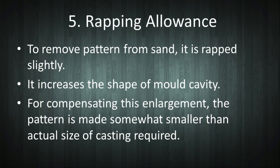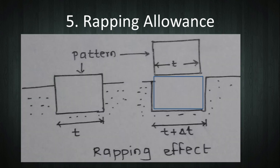The next allowance is wrapping allowance. To remove the pattern from sand easily, it is rapped slightly, which causes an increase in the size of the mold cavity. To compensate for this, the pattern is made somewhat smaller than the actual size required. As seen in the figure, when the pattern is removed it is rapped, and hence the cavity gets enlarged. Therefore, wrapping allowance is provided, making the pattern slightly smaller in size.